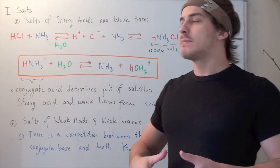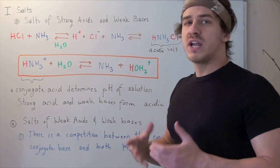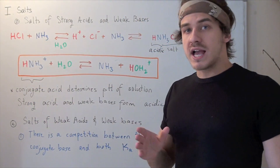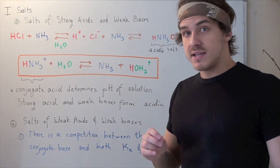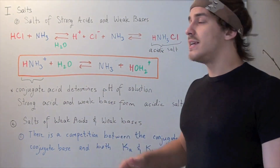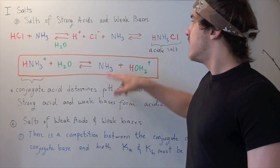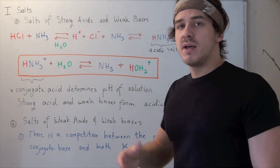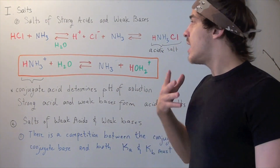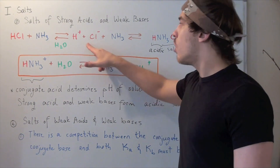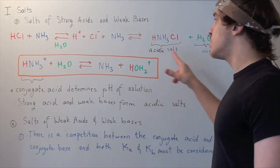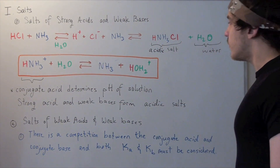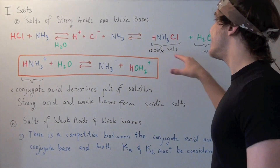Now let's look at what types of salts are formed when strong acids react with weak bases. Hydrochloric acid, a strong acid, reacts with ammonia, a weak base. In the presence of water, they dissociate into H+ ion, a chloride ion, and ammonia. Ammonia reacts with H+ to create ammonium, a positively charged ion, which then reacts with chloride to neutralize the charge, creating an acidic salt.